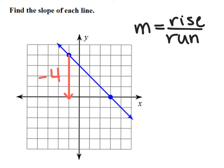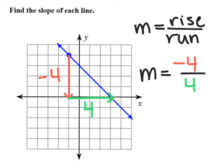Then I move over one, two, three, four units to the right. Since it's to the right, it's a positive movement. Now plugging into the slope formula, the rise is negative four and the run is positive four. Simplifying, negative four divided by positive four gives a slope of negative one.